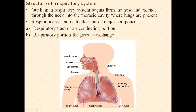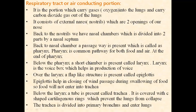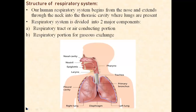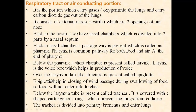Below the pharynx, a short chamber is present called the larynx. The larynx is the voice box which helps in the production of voice. Over the larynx, a flap-like structure is present called the epiglottis.